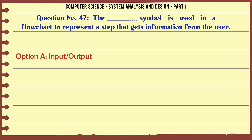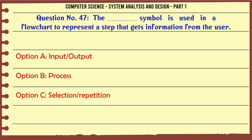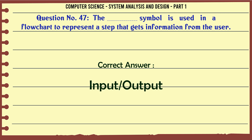The input/output symbol is used in a flowchart to represent a step that gets information from the user. A. Input/output. B. Process. C. Selection/repetition. D. Start/stop. The correct answer is: Input/output.